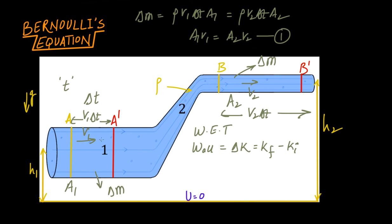Let me figure out all the forces. The liquid on the left-hand side of section AA' applies a force on that face. This force is pressure times area, so F1 equals P1 times A1. The liquid on the right-hand side of B also applies force on face B, directed leftwards. Let's call this F2, where F2 equals P2 times A2.